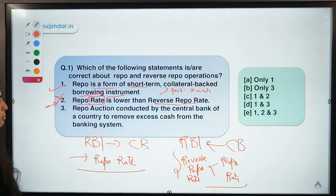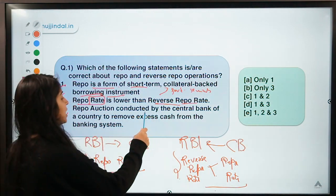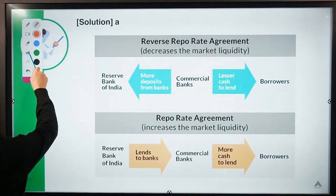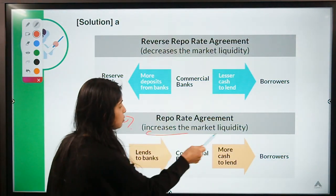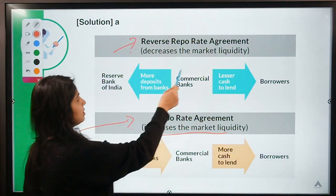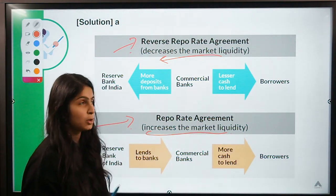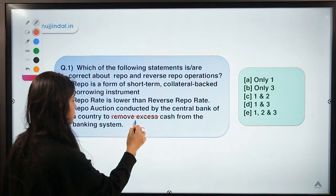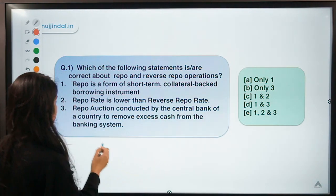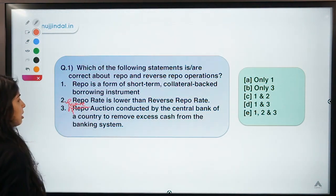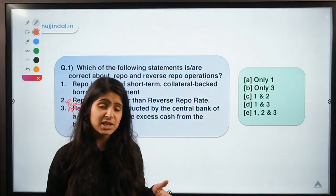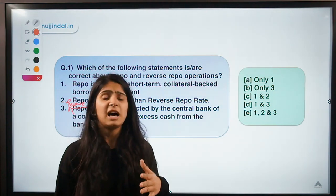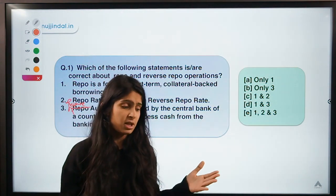Statement three says repo auctions are conducted by the central bank to remove excess cash from the system — this is also a wrong statement. A repo operation is conducted to infuse liquidity in the market, whereas a reverse repo operation is conducted to decrease market liquidity or suck out excess liquidity from the banking system. To correct statement three it should say either 'infuse cash' or add 'reverse' before repo.